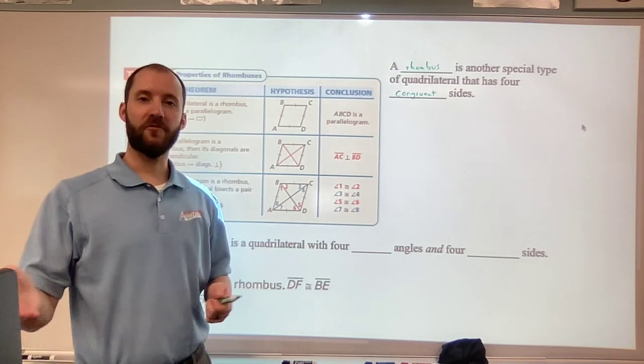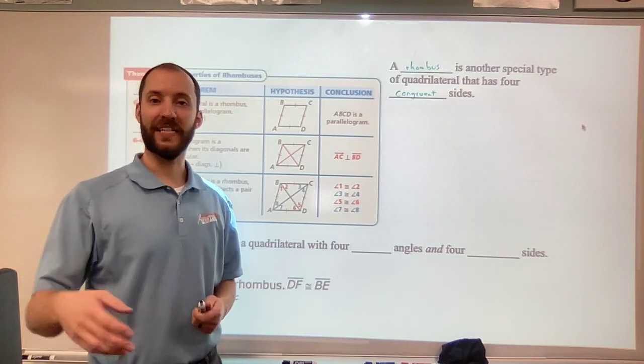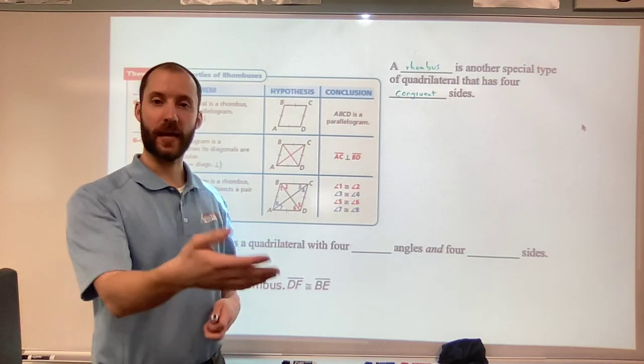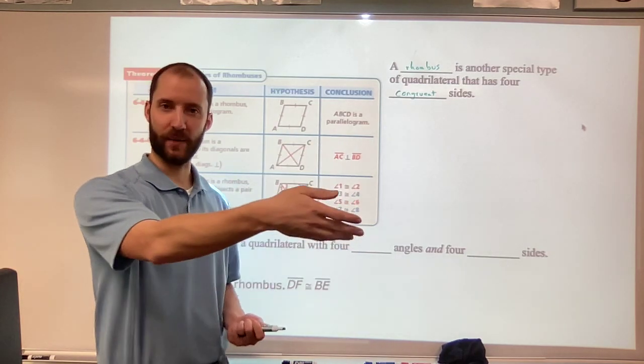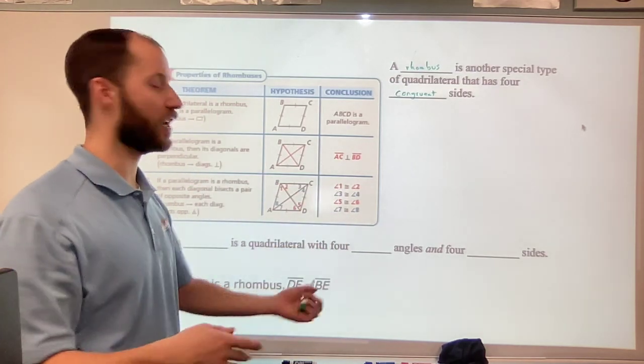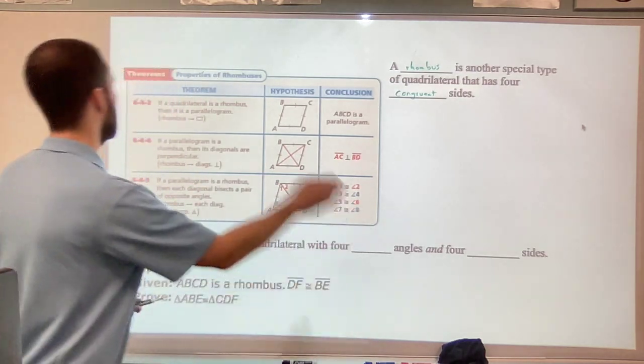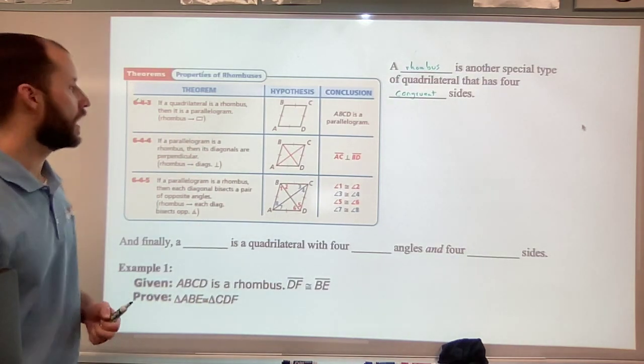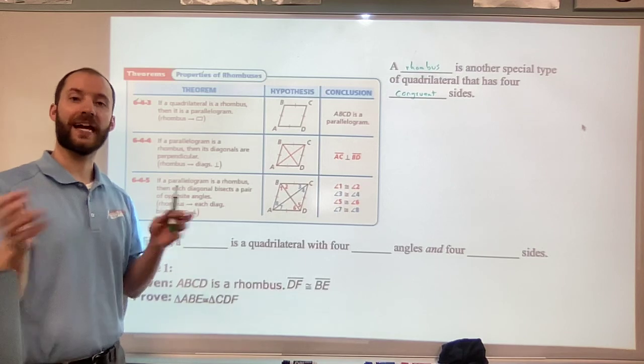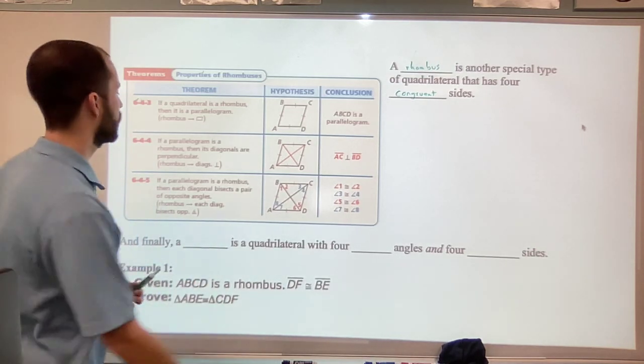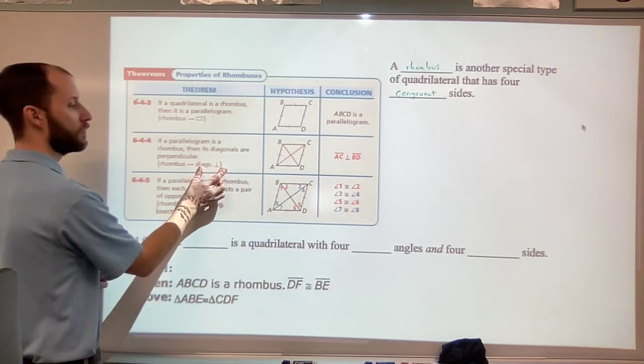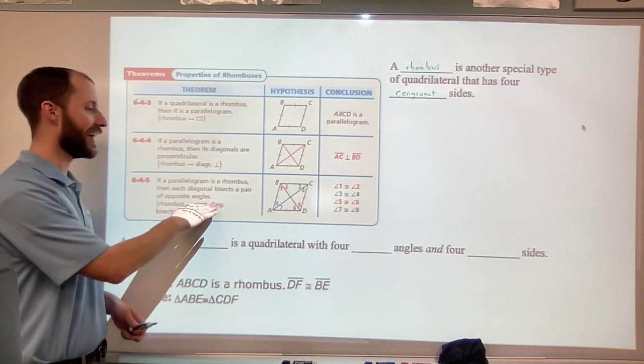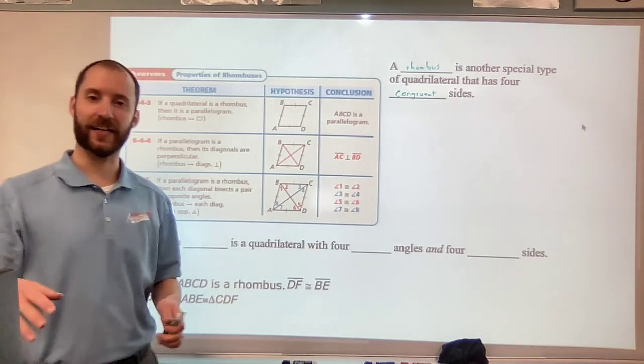So if it has four congruent sides, that means the opposite sides are congruent as well. So that means it's a parallelogram. So law of syllogism, or the transitive property, if rhombus, then parallelogram. But also those diagonals that bisect each other, they're also perpendicular to each other. And those diagonals bisect opposite angles.